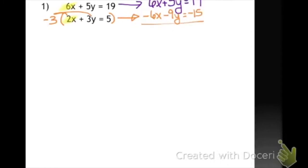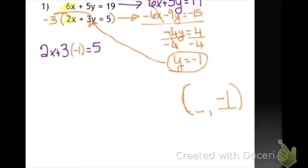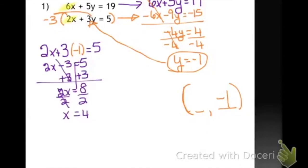Now that I have opposites, I know how to solve this equation by adding them together. And I get that y equals negative 1. Now I'm going to take that negative 1 and plug it back into one of my original equations — it doesn't matter which one. And that is going to give me 2x minus 3 equals 5. This is a two-step equation you know how to solve. And when I do, I get that x equals 4. So in this one, I figured out that if I multiplied by negative 3, I could create an opposite.